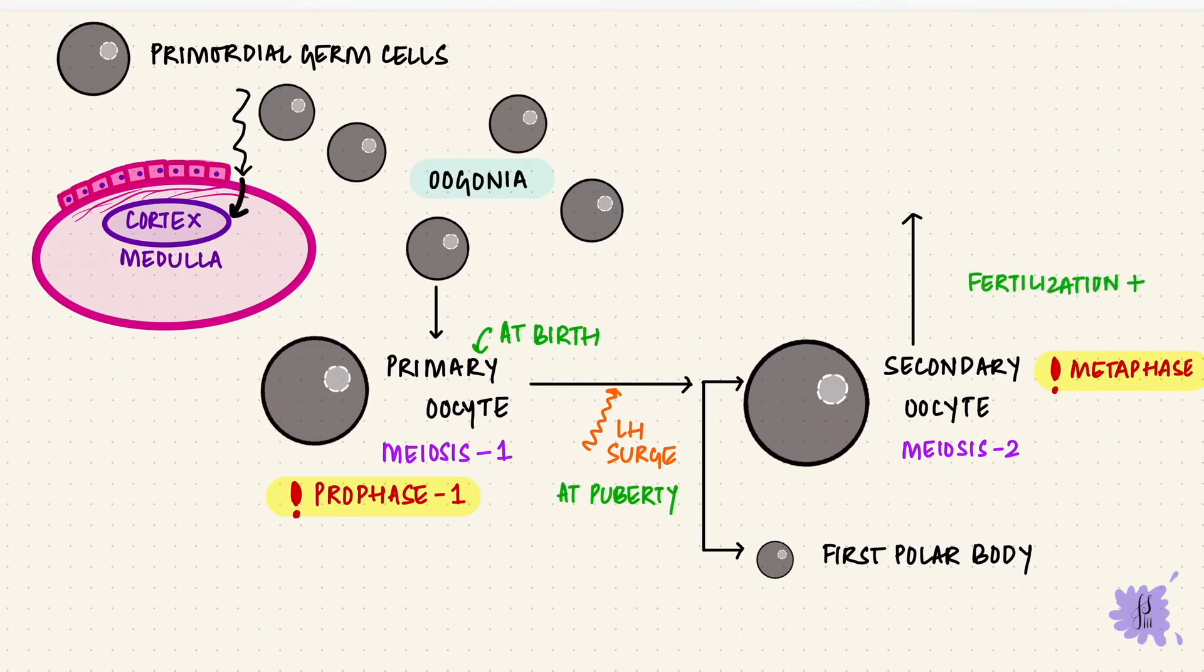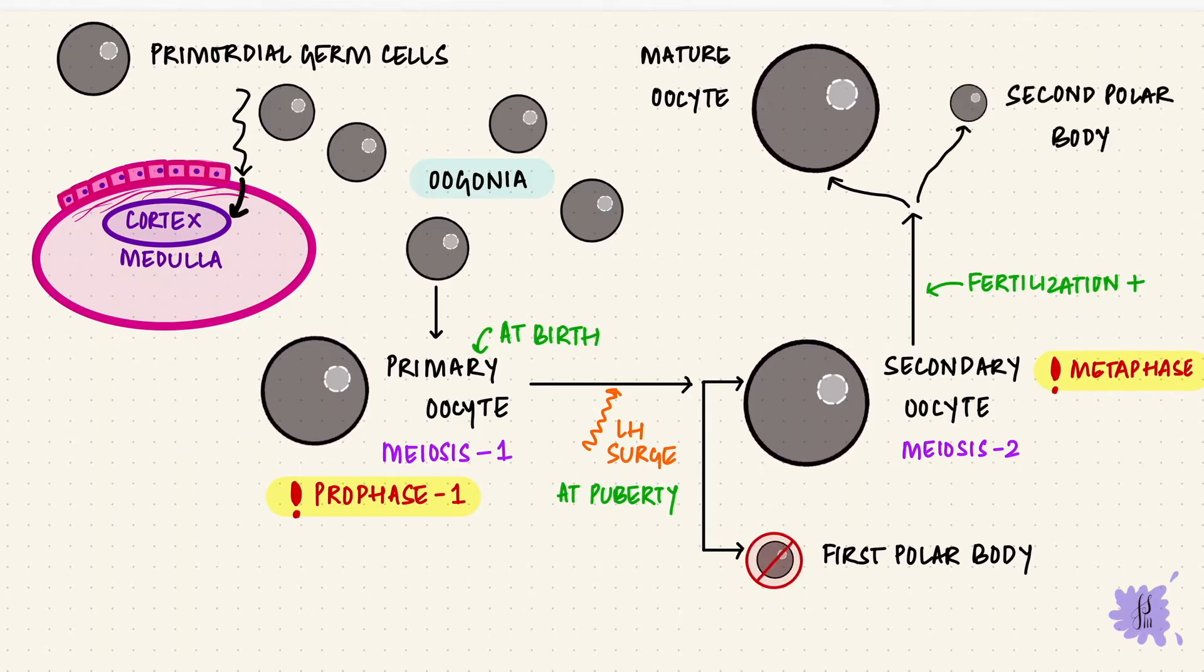If fertilization happens, then it completes the second meiotic division to become a mature oocyte, or an ovum, and the second polar body, which is smaller. That first polar body, it could degenerate, or it could undergo a second meiotic division and form more polar bodies. But ultimately, all the polar bodies degenerate, and what remains is one functional mature ovum, which is haploid.